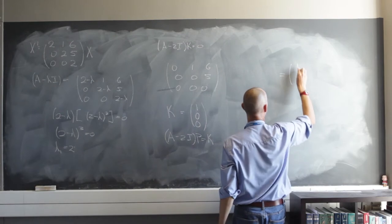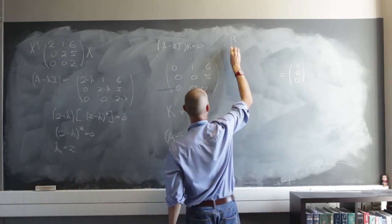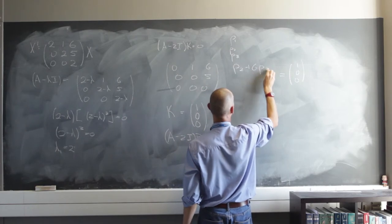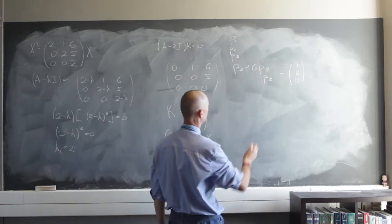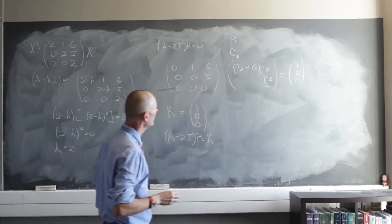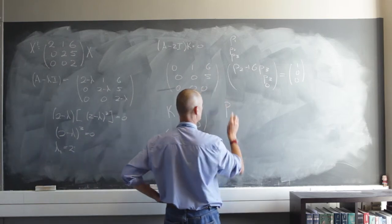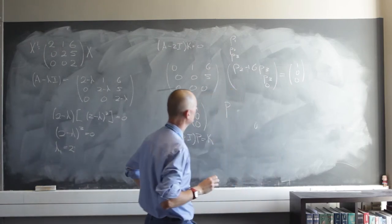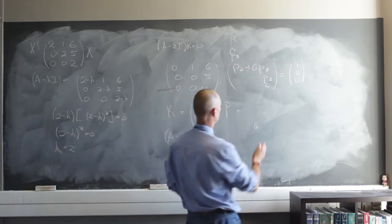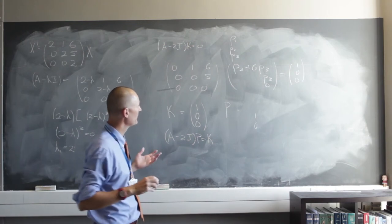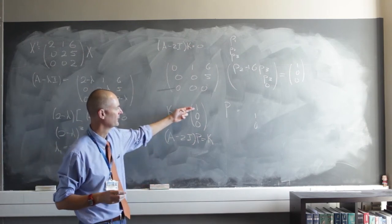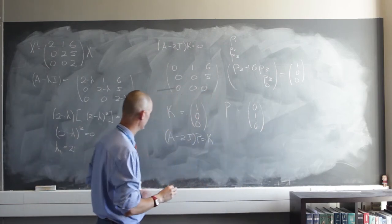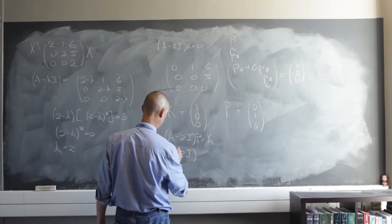Now the system equals [1, 0, 0]ᵀ. So we have p sub one, p sub two, p sub three satisfying: p sub two plus six times p sub three equals one, five times p sub three equals zero, and zero equals zero. From this, p sub three equals zero, and if p sub three is zero then p sub two must be one. p sub one can be anything, and I'm going to start with zero.